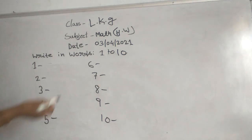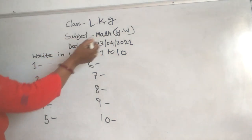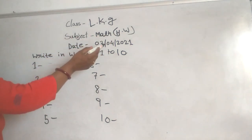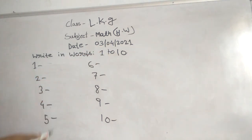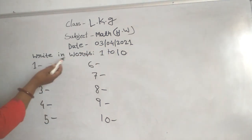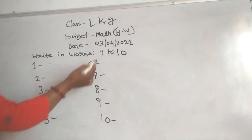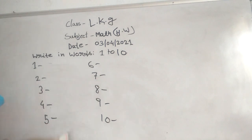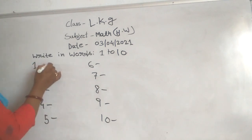Hello students, class LHG, subject math, day 5 April 2021. Write in verse 1 to 10 — the tonal spelling of 1 to 10, then link the other.